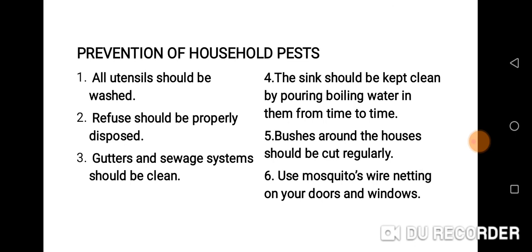Bushes around the houses should be cut regularly to prevent household pests. If the bushes in your environment are too high, dangerous animals like snakes and scorpions can invade the place. That is why we should always ensure we cut the grasses in our environment very, very short. We should also ensure we use mosquito wire netting on our doors and windows to prevent mosquitoes. These are the ways of preventing household pests.